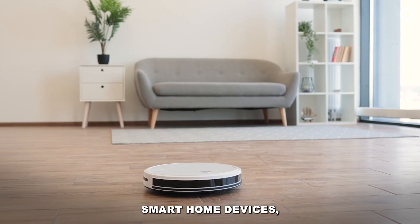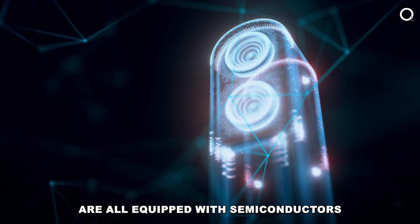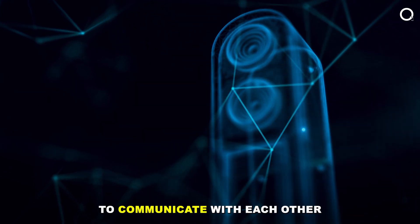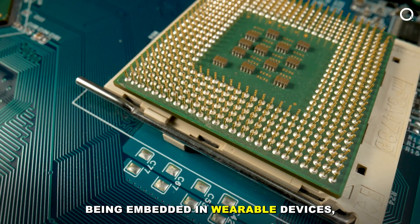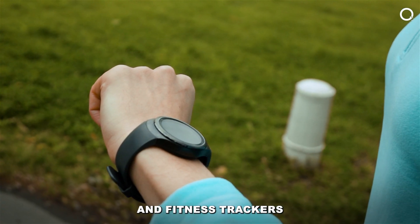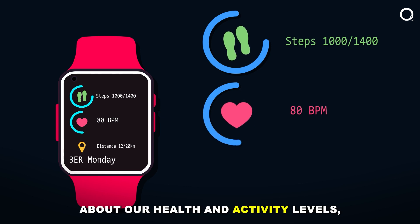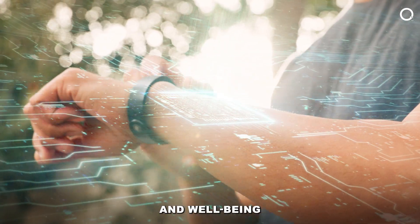For example, smart home devices, such as thermostats, lights, and doorbells, are all equipped with semiconductors that allow them to communicate with each other and with the internet. We're also seeing semiconductors being embedded in wearable devices, such as smartwatches and fitness trackers. These devices can collect data about our health and activity levels, which can then be used to improve our health and well-being.